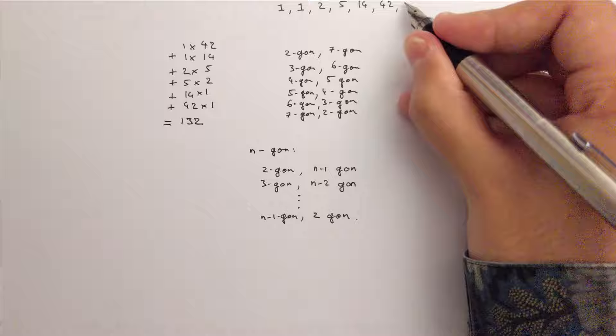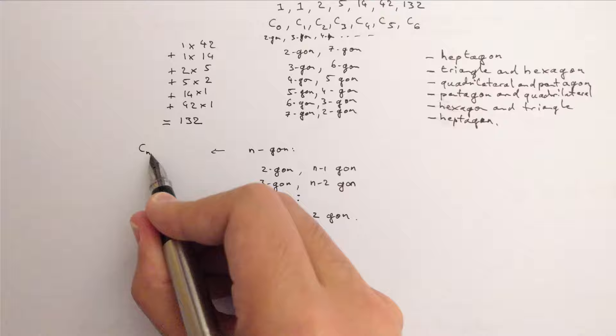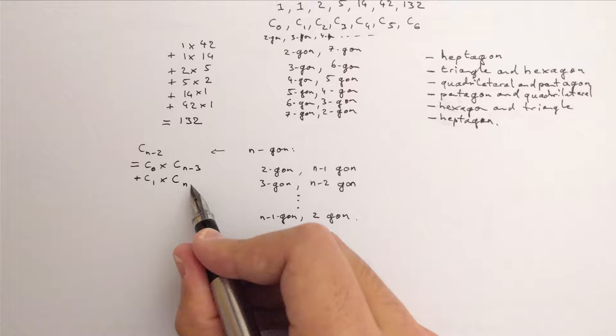We call those numbers c0, c1, c2, and so on, so that the number of ways to cut an n-sided polygon into triangles is c_{n-2}. c_{n-2} can then be computed as c0 times c_{n-3} plus c1 times c_{n-4} plus c2 times c_{n-5}, and so on.